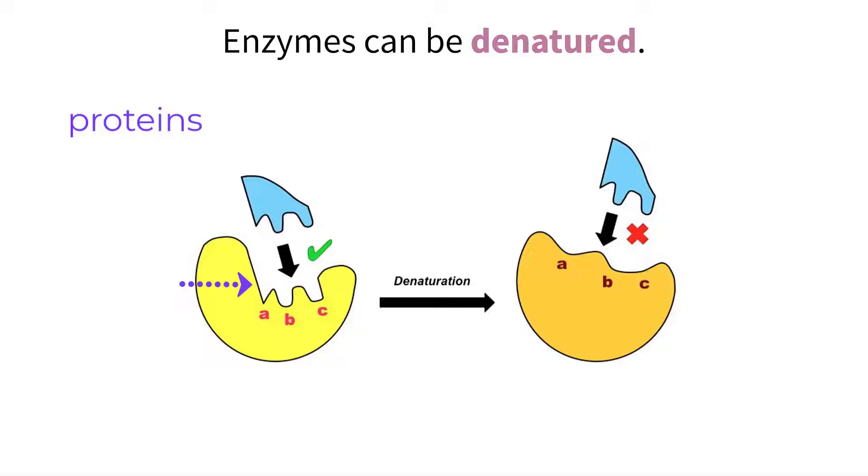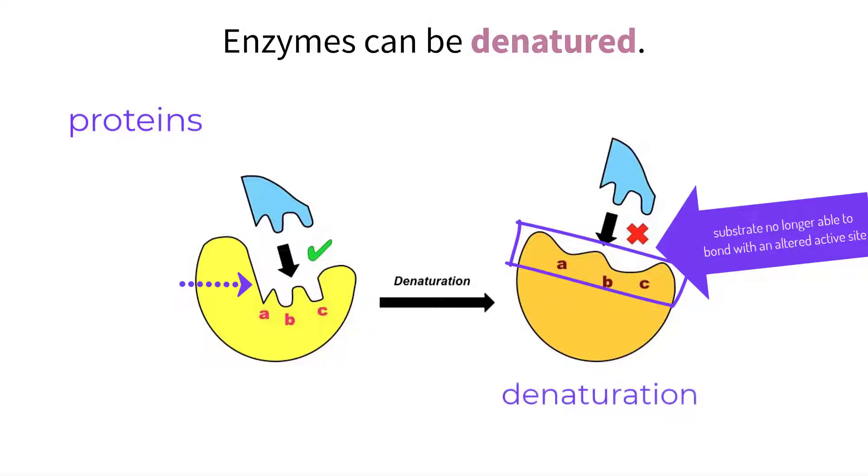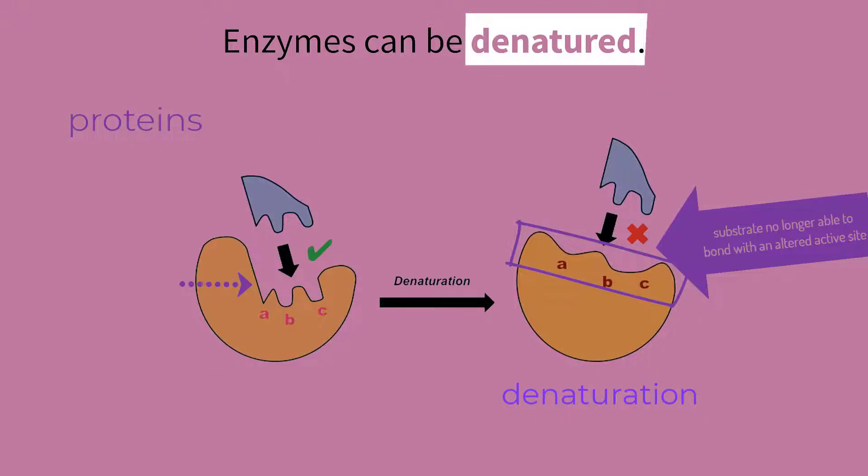But if the structure of the protein or the enzyme in this case gets changed, it can affect its ability to function. Altering the active site in any way means the substrate will not be able to lock in properly, effectively rendering the enzyme useless. This process is referred to as denaturation and the enzyme in this case we can say is denatured.